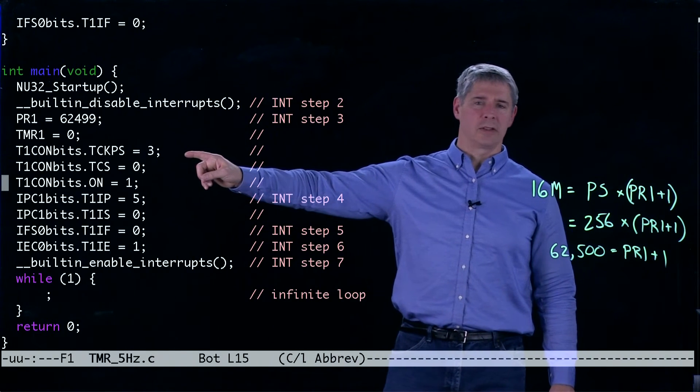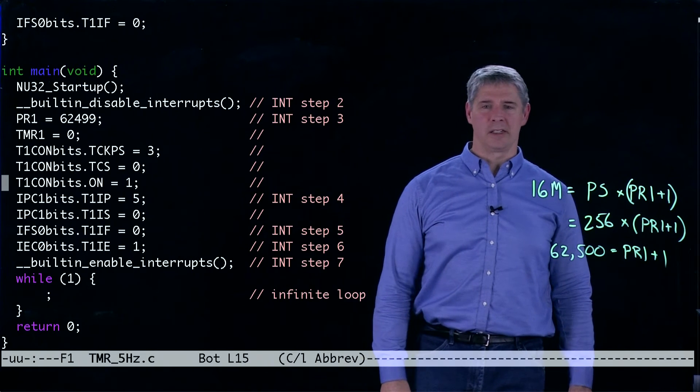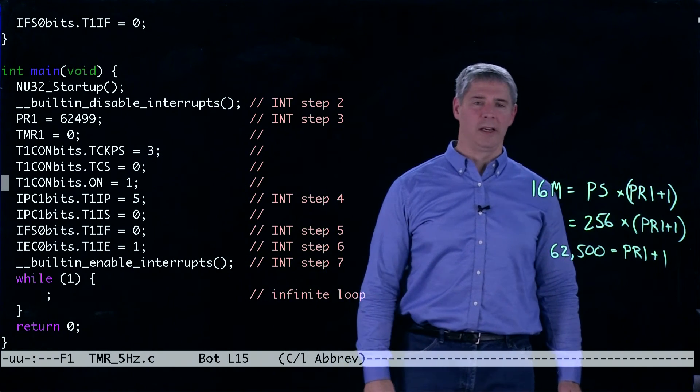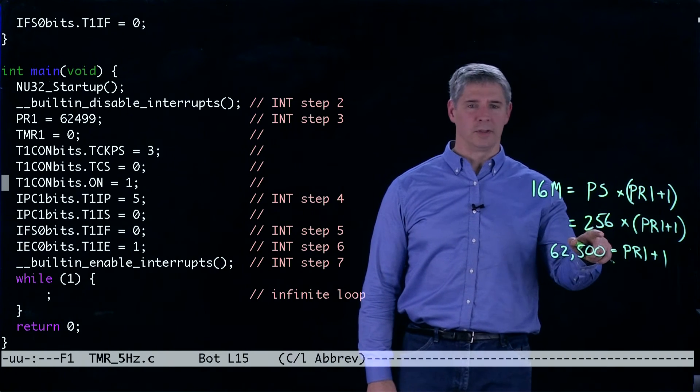Here's where we set the prescaler. If we consult the data sheet, we can see by setting the bits TCKPS to 3 that we're choosing a prescaler of 256.